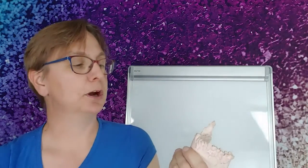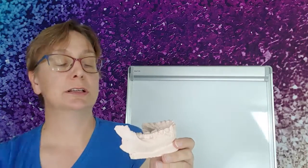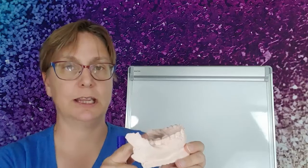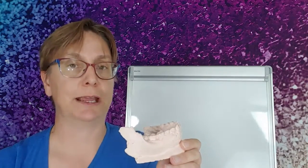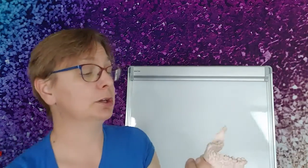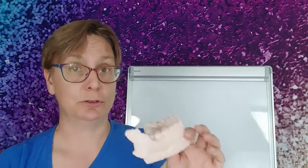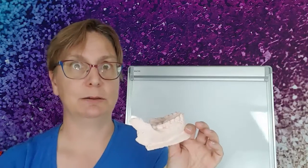An important part of this project is understanding the teeth that we use to study the chemistry in order to understand past environments. So right now I'm going to go over a quick primer of mammal tooth anatomy and position.